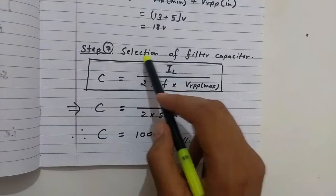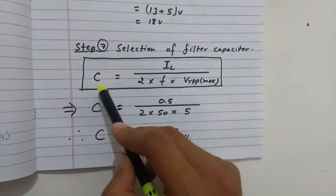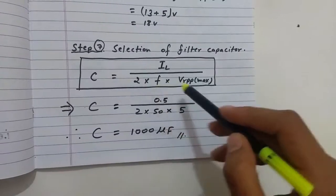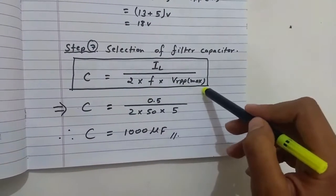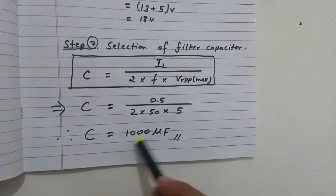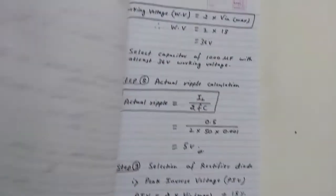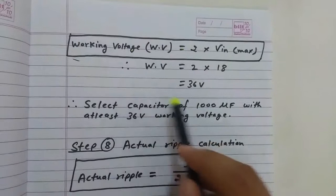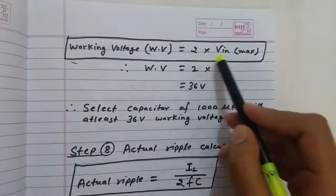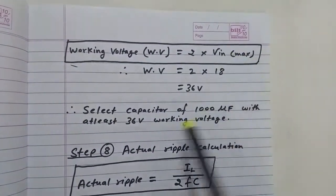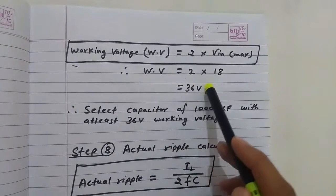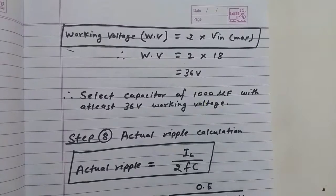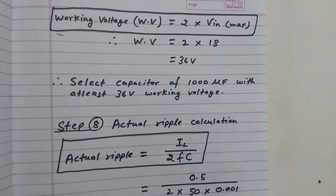The seventh step is selection of the filter capacitor: C = I_load / (2 × f × V_ripple(p-p) max) = 1000 µF. The working voltage of this capacitor should be 2 × V_in(max) = 36 V. So we select a 1000 µF capacitor with at least 36 V working voltage.